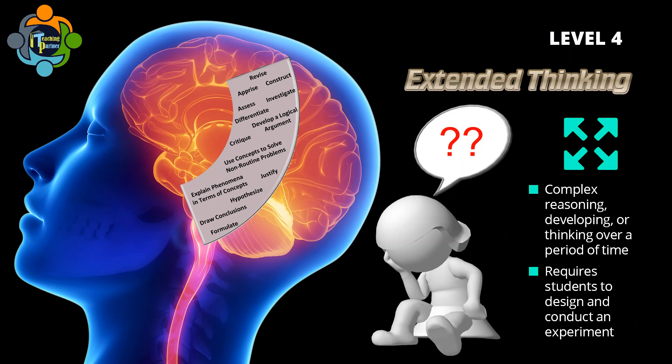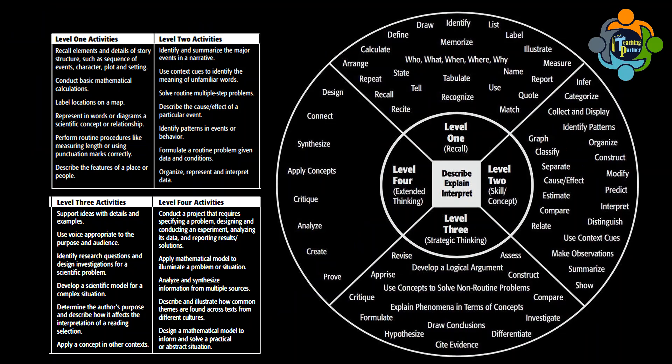Level four is Extended Thinking — the most complex of the four levels. This level requires complex reasoning, planning, developing, and thinking, most likely over a period of time. A student designing and conducting an experiment is a demonstration of this level. This level takes average class students to the highest level of thinking, and gives a great opportunity for students to apply their knowledge. It is usually for higher achievers. Activities include: synthesize, apply concepts, critique, analyze, create, and proof. You can use this level for extension questions.